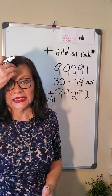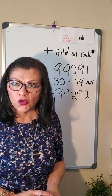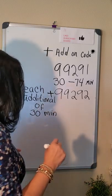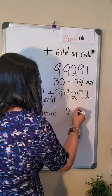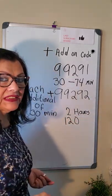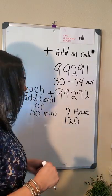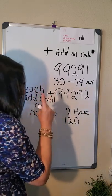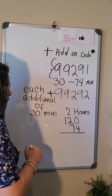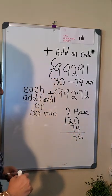Let's say the patient was in the critical care unit and the doctor saw the patient for 2 hours. 2 hours equals 120 minutes, because there are 60 minutes in 1 hour. The first 74 minutes are going to be coded using 99291, one time only. That leaves us with 46 remaining minutes.